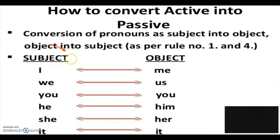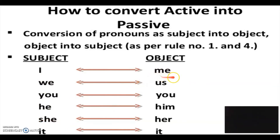I'm going to explain the difference between subject pronouns and object pronouns. All the pronouns — I, we, you, he, she, it, and they — on my left hand side are called subject pronouns. All the pronouns on my right hand side — me, us, you, him, her, it, and them — are called object pronouns.